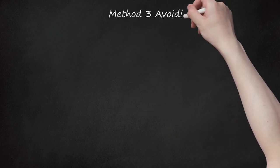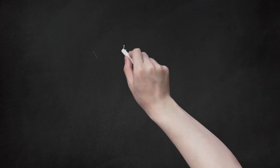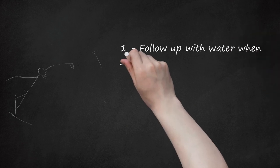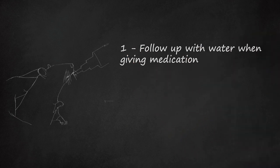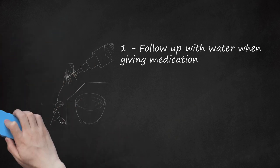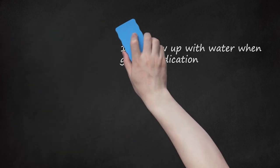Method 3: Avoiding Pitfalls. 1. Follow Up With Water When Giving Medication. If you're administering medication by a syringe, follow up with 5-10 milliliters, 0.17-0.34 fluid ounces, of water. This will help your rat's body digest his medication quicker. Your rat may also be slightly dehydrated if he was struggling or upset when being syringe-fed.